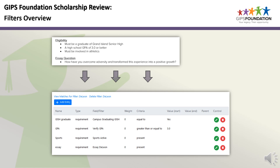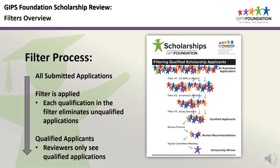This is what the de Leon filter looks like in our scholarship system. Every scholarship has a filter. This is an example of the filter process: all submitted applications are at the top, then the filter is applied — the GPA requirements, involvement in athletics, and the special essay question. Each qualification in the filter eliminates unqualified applications, so reviewers only see qualified applications.